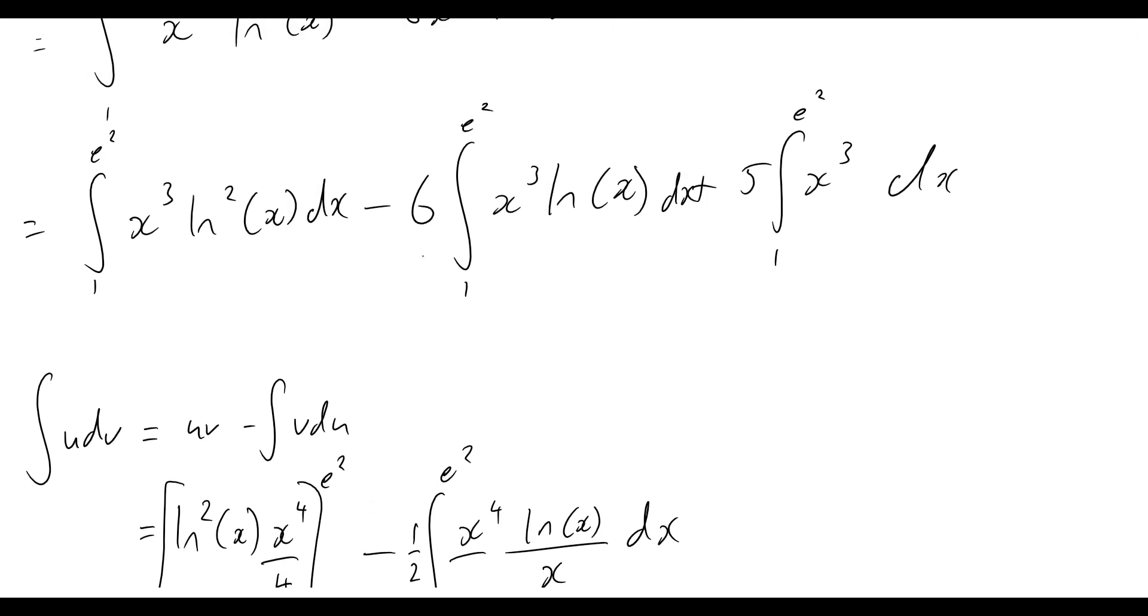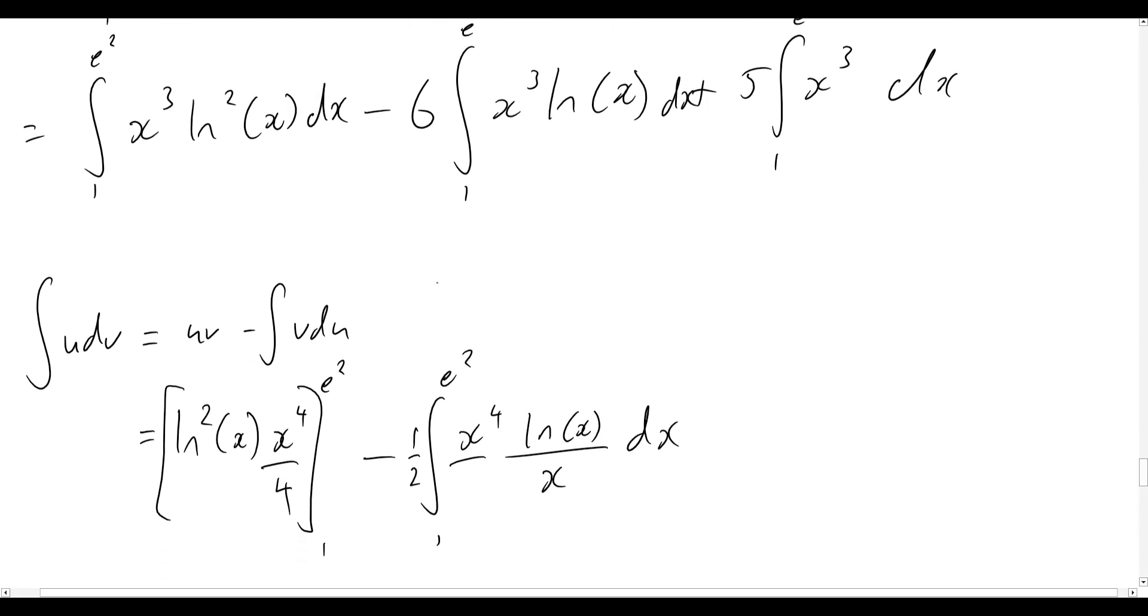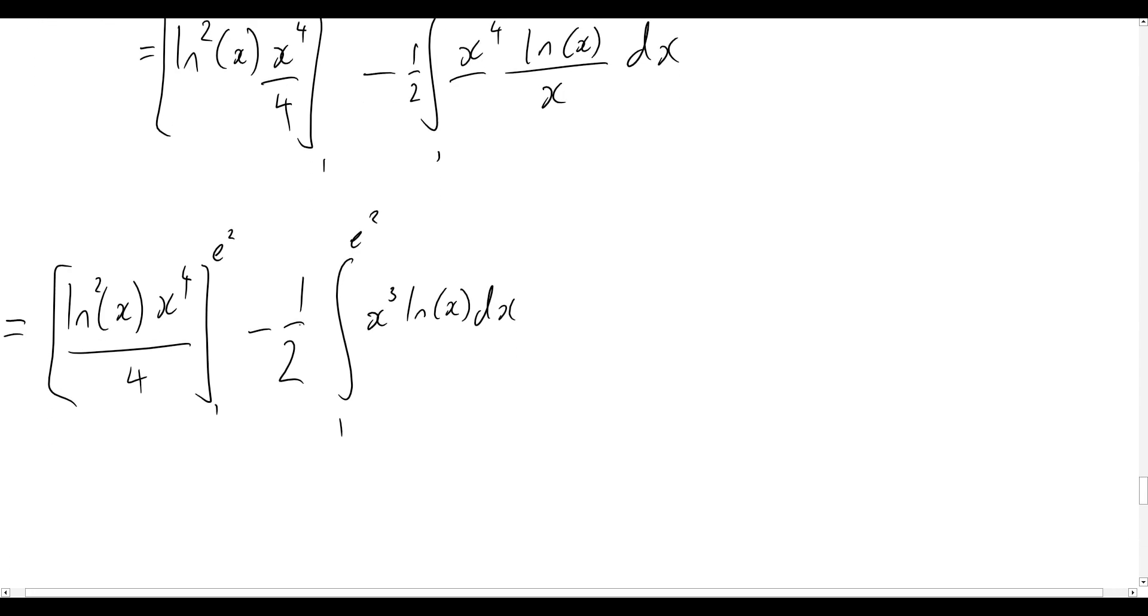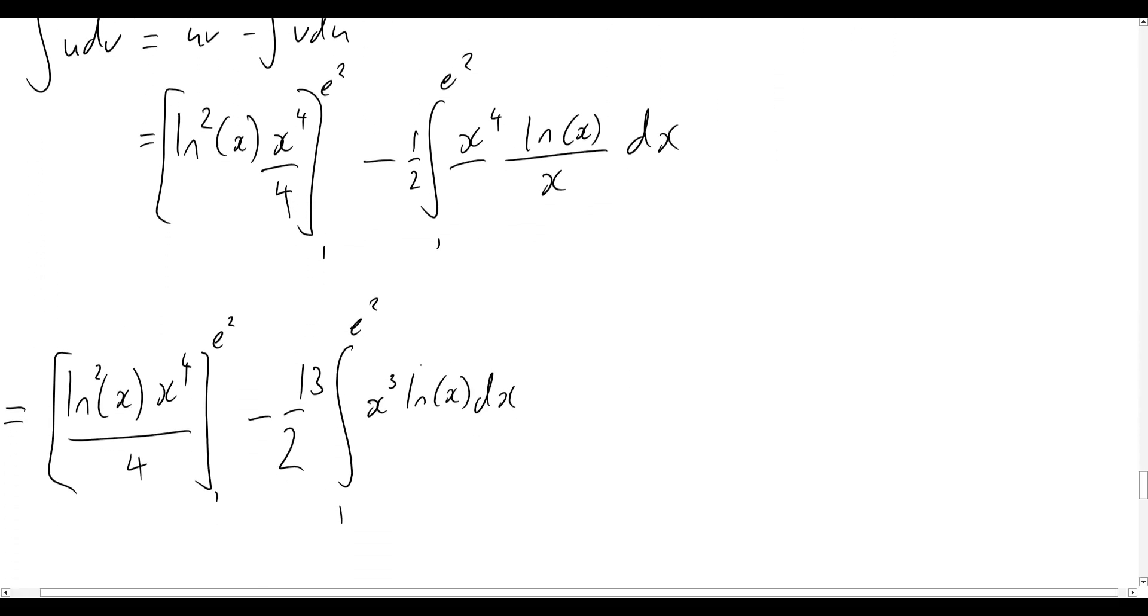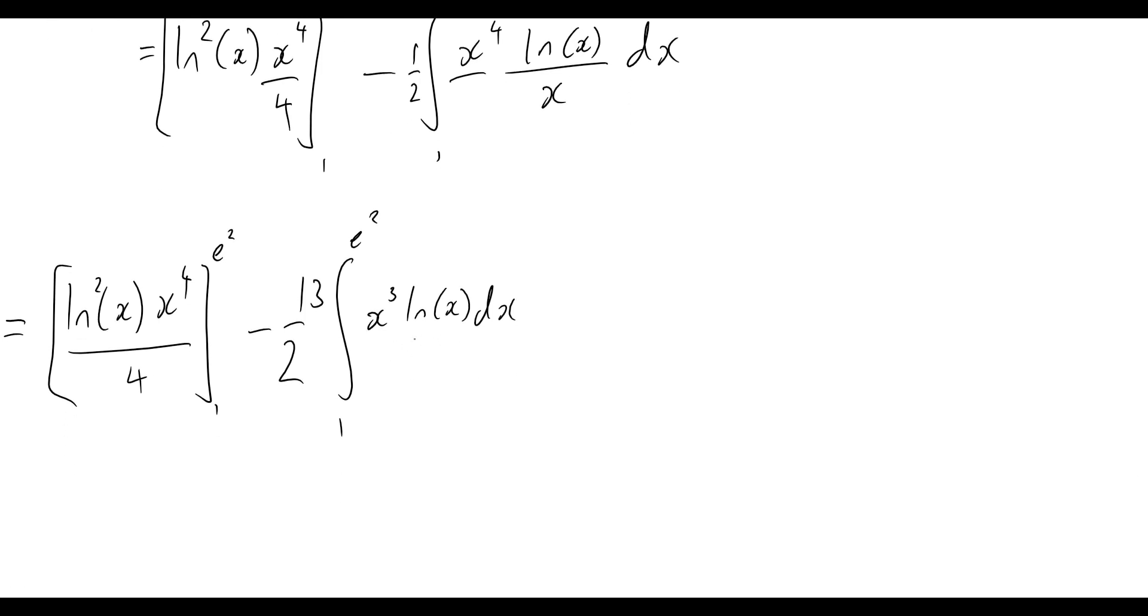So if I say 1 half, or minus 1 half rather, minus 6, I know that what I'll be able to do is just simply change this to now be a minus 13 on 2 out the front of this integral here. Just bringing that minus 6 down into here as well, since they both have the exact same integrand.